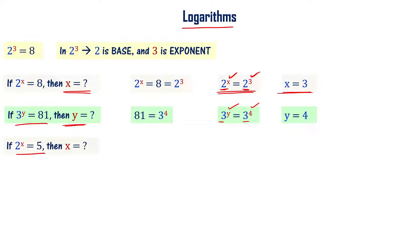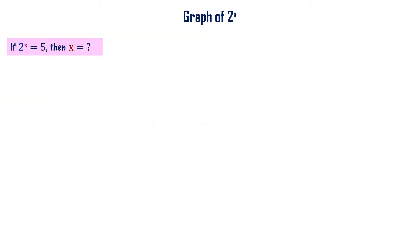But consider: if 2 power x equals 5, what is the value of x? We know 2 squared equals 4 and 2 cubed equals 8, so x is somewhere between 2 and 3 — we can't easily tell the exact value. In such a situation, we can draw the graph of 2 power x to find the value. Let p of x equal 2 power x.